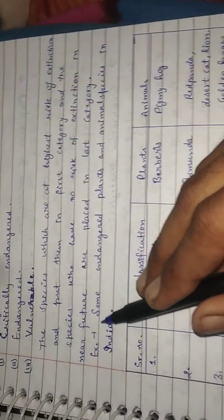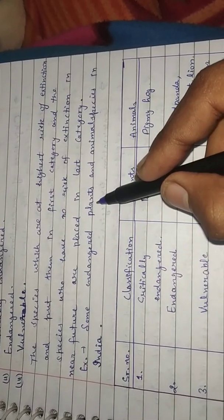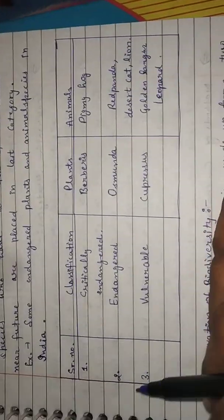Examples of these are some endangered plants and animal species in India. This is the table for these three types.